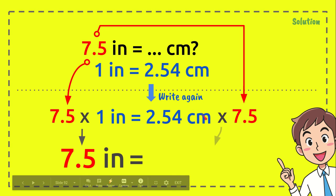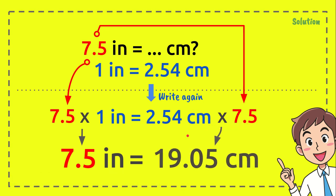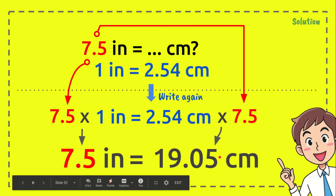And 2.54 centimeters times 7.5 equals 19.05 centimeters. And this is the answer to the question.